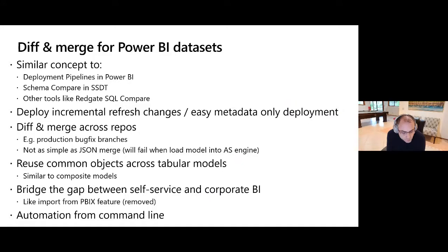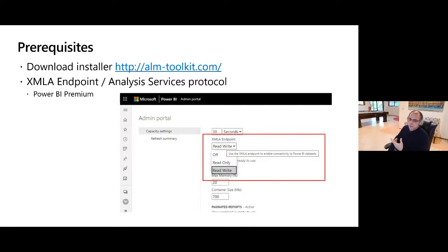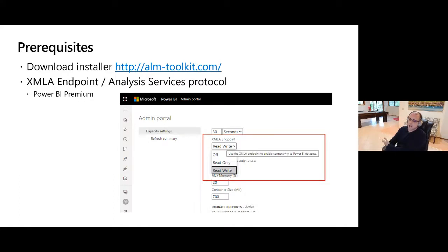To use ALM Toolkit you need to install the tool and also use the XMLA endpoints, because it makes changes to the dataset using the XMLA endpoint. You can enable this in the Power BI Premium capacity settings. It works in Premium Per User - with the recent pricing announcement, the XMLA endpoint works in PPU, therefore ALM Toolkit works in PPU. I anticipate a significant increase in usage because of Premium Per User - many people have asked about using this in Pro, which unfortunately isn't supported, but PPU is the next best thing.